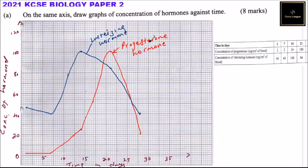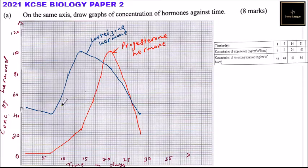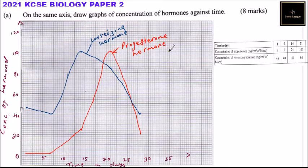If you produce graphs similar to these, you should be able to get 8 marks. Marks are awarded for using the right scale, labeling your graph, drawing a good smooth graph, and indicating which graph represents which hormone. Now let's move to part b.